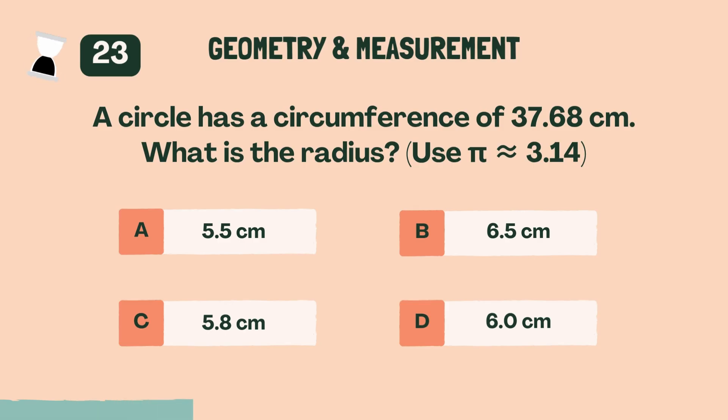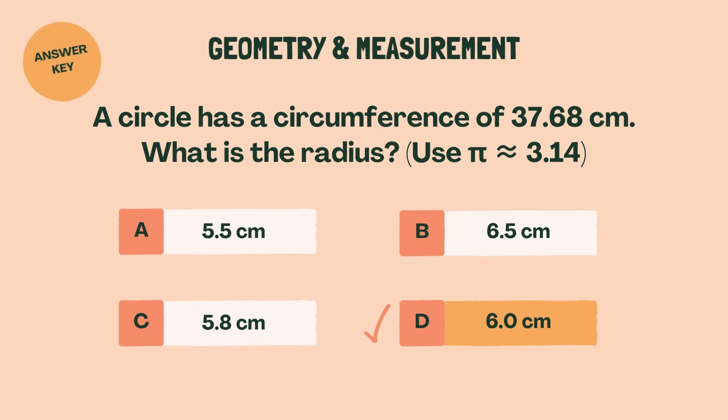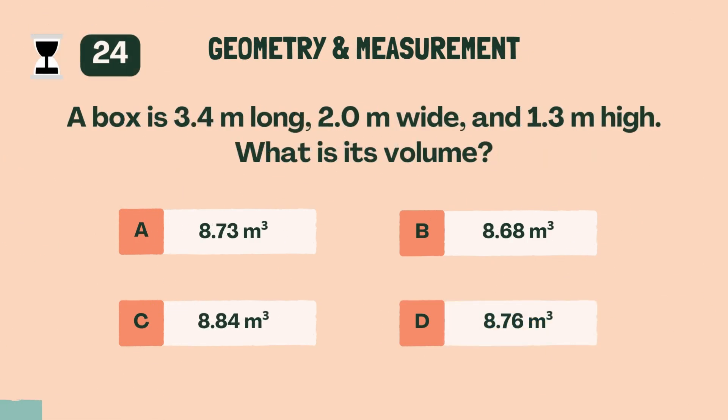A circle has a circumference of 37.68 centimeters. What is the radius? D, 6.0 centimeters.